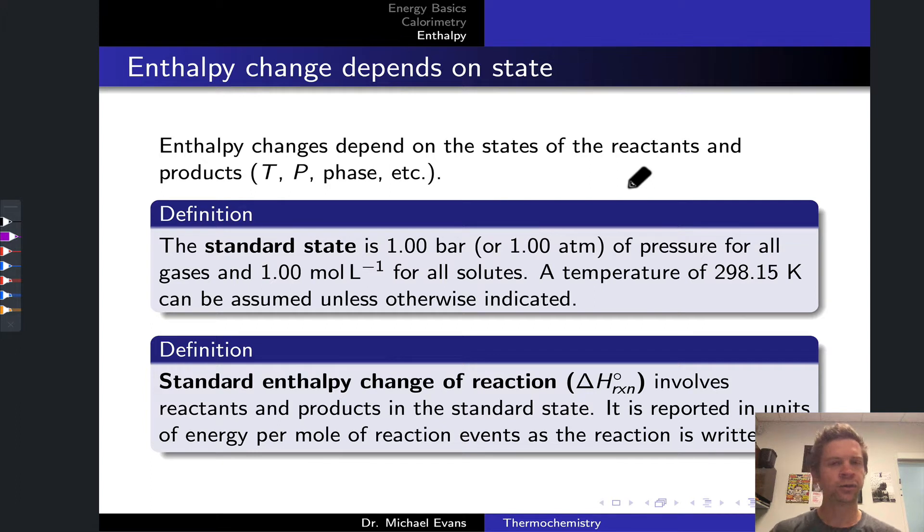The first thing we should say about enthalpy change, which is represented with the symbol delta H, is that it depends on the state of the reactants and products if we're talking about a chemical process. So it does depend on, for example,